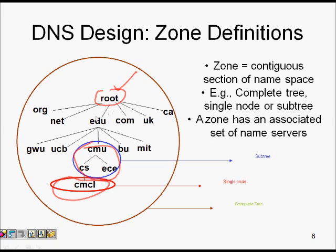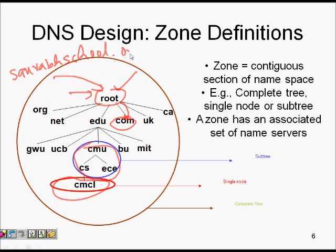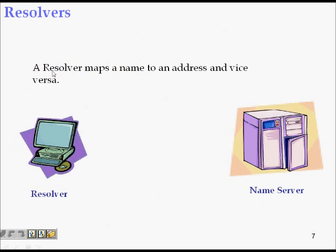You can imagine how large this tree would be, so DNS is always a distributed database. The root does not store everything — it just knows that if you're asking for an IP address ending in .com, it sends the request to the .com name server. Similarly, for something like sorrowschool.org, it routes the request to the .org name server.